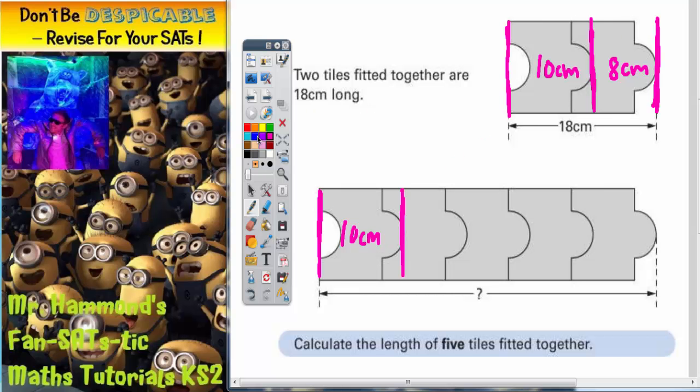Then just like what we've done here, where we said from the end of the first tile to the end of the second tile that was 8 centimeters, that's going to be from here to here. So that's 8 centimeters.